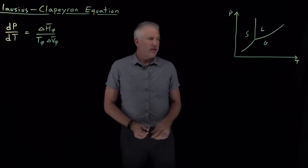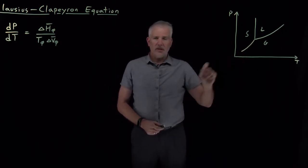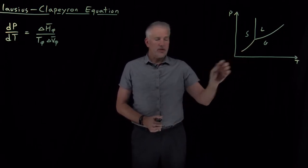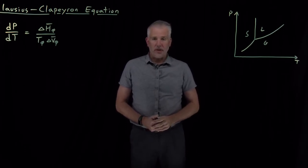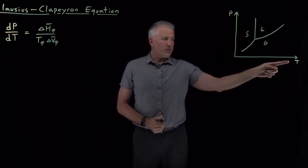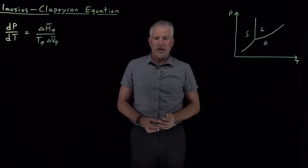Okay, so we understand now that the slope of the various coexistence lines on a pressure-temperature phase diagram is given by the Clapeyron equation. That tells how the pressure changes with respect to temperature along any one of these phase coexistence lines.